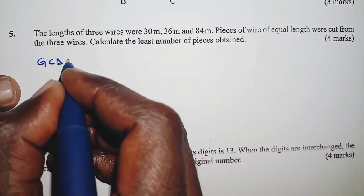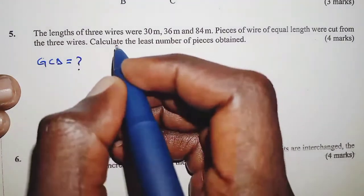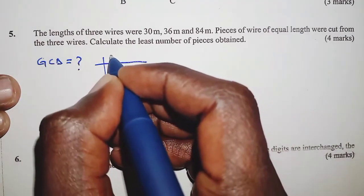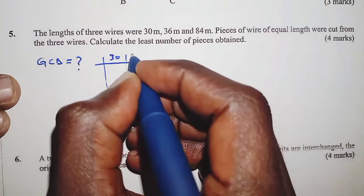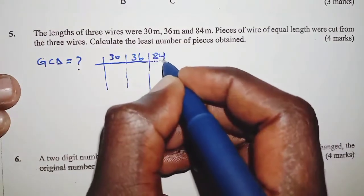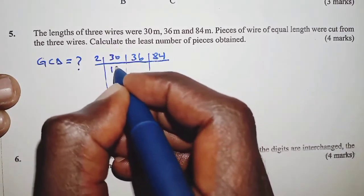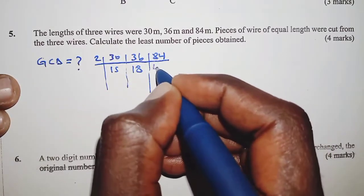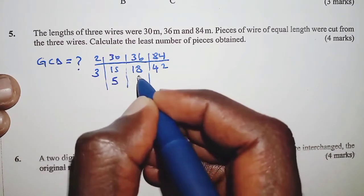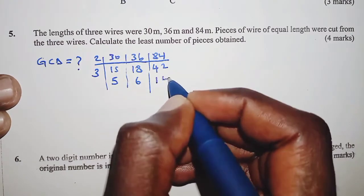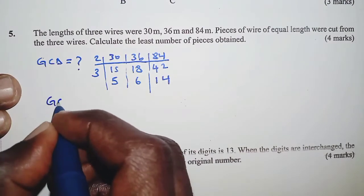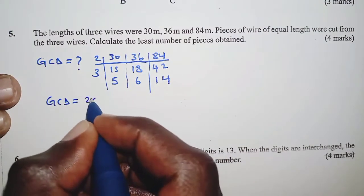Now, the GCD should represent the length of each piece. So I'll prefer the long division method. We have 30, 36, and finally 84. Beginning with 2, we'll have here 15, 18, and then 42. Next we have 3, and that is 5, 6, and 14. At this particular point, we do not have a common factor. So that means GCD is 2 by 3, which is 6.